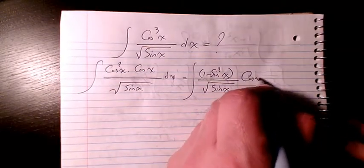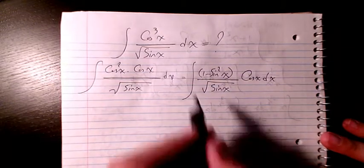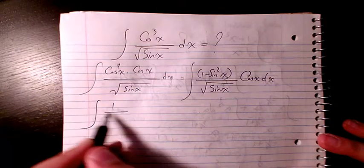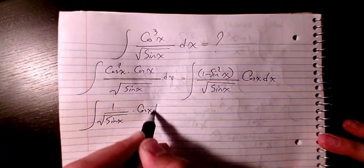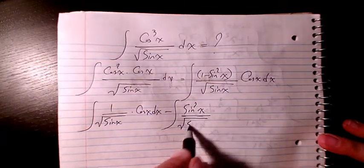So we have cosine x dx outside. Then I will separate these two: it will be 1 over square root of sine x times cosine x dx, minus sine squared x divided by square root of sine x times cosine x dx.